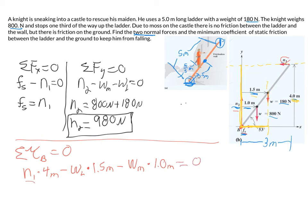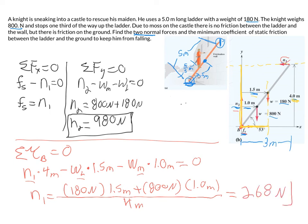And if we notice, look, N1 we don't know, but we want. We know the weight of the man and the weight of the ladder, so we can really easily solve. N1 is just going to be equal to the weight of the ladder, 180 newtons multiplied by 1.5 meters plus the weight of the man, which is 800 newtons multiplied by 1.0 meters and all that divided by 4 meters. So if you plug and chug, you should find that N1 is equal to 268 newtons, box-worthy for sure, which means our force of static friction is equal to N1, so it's also equal to 268 newtons.